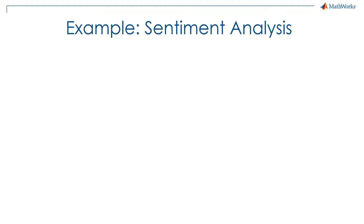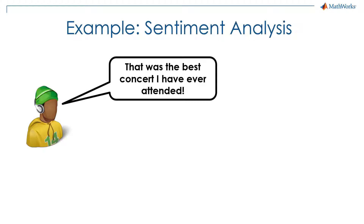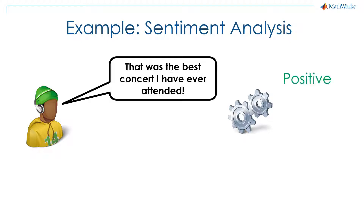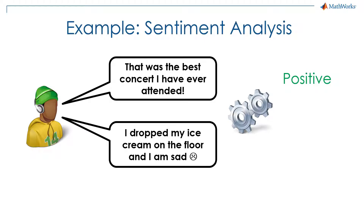Suppose a person says this was the best concert they ever attended. A sentiment analysis algorithm will look at this text and output what it thinks is the intent or the sentiment of the person. In this case, it should predict that this is a positive statement. On the other hand, if the person says they dropped their ice cream on the floor and they are sad, then the algorithm should predict a negative sentiment.